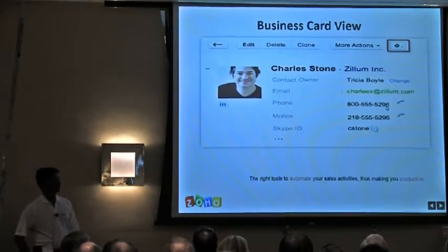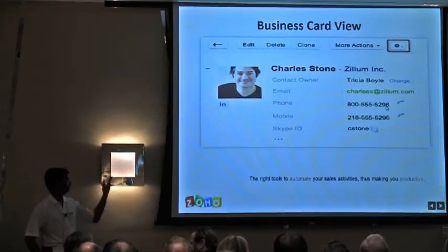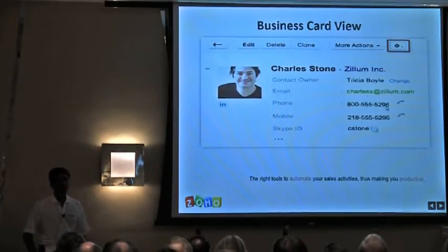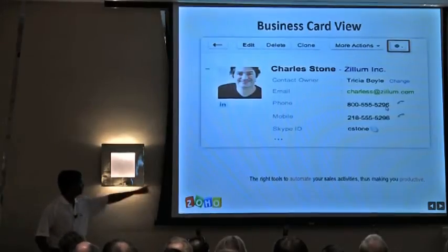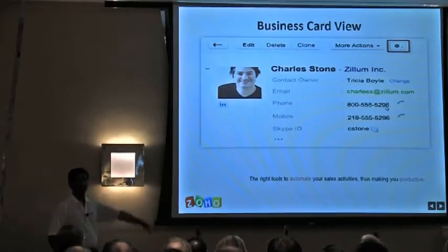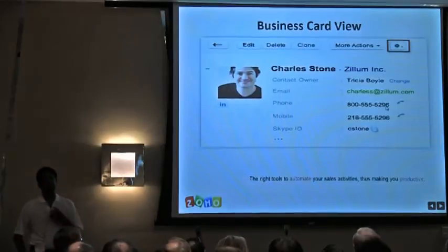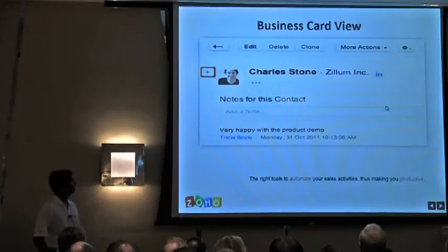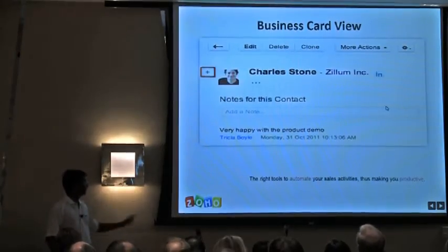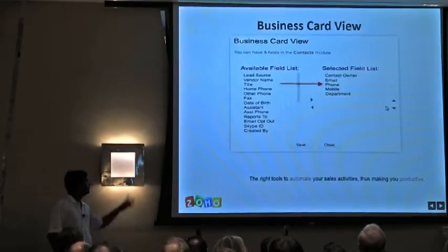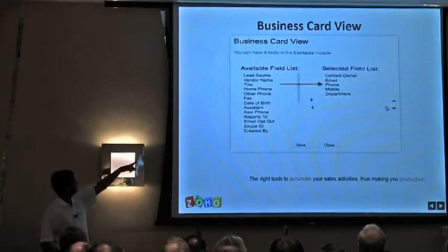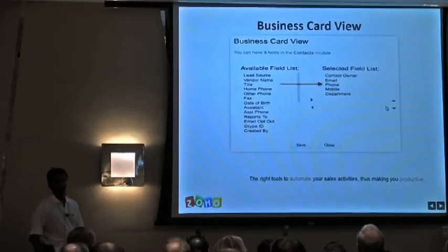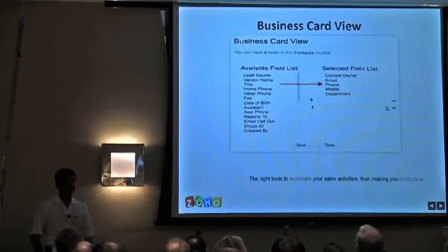We also have LinkedIn integration. If you know a user's LinkedIn email address, you click on it and the system automatically fetches information from LinkedIn and displays it in the CRM. The three dots at the bottom of the business card take you to the detailed page with all field information. You can customize the business card view by clicking the plus sign and selecting up to five fields — such as email, phone, mobile, department, Facebook ID, or Twitter ID — to display.